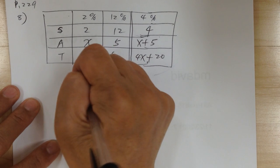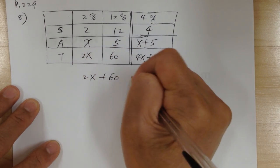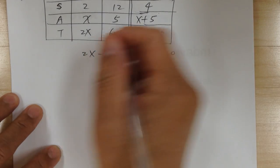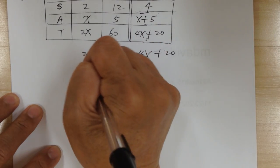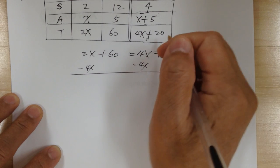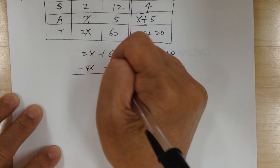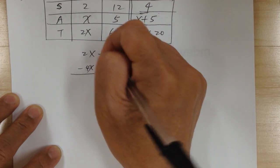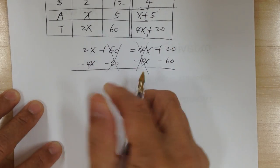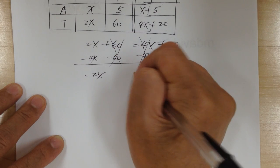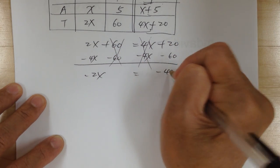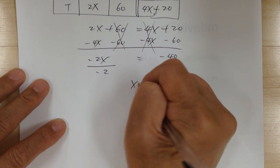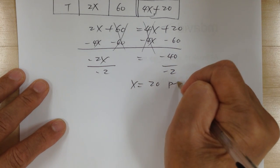Here's your equation: 2X plus 60 equals 4X plus 20. Move the variable to this side — this will cancel out. Move the variable to this side — this will cancel out. I like to keep the variable on this side. Then divide by negative 2, divide by negative 2. So X equals 20 pints.